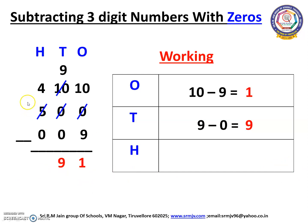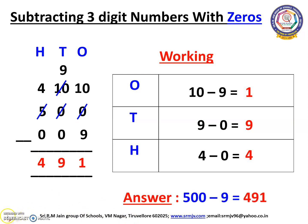Now we are going to do the 100's place. Here we have 4 and 0. We can subtract 0 from 4. Open your fingers children. 0 after: 1, 2, 3, 4. How many fingers have you opened? We have opened 4 fingers. So we have to write 4 here. The difference between 500 and 9 is 491. I hope you all understood children. Thank you.